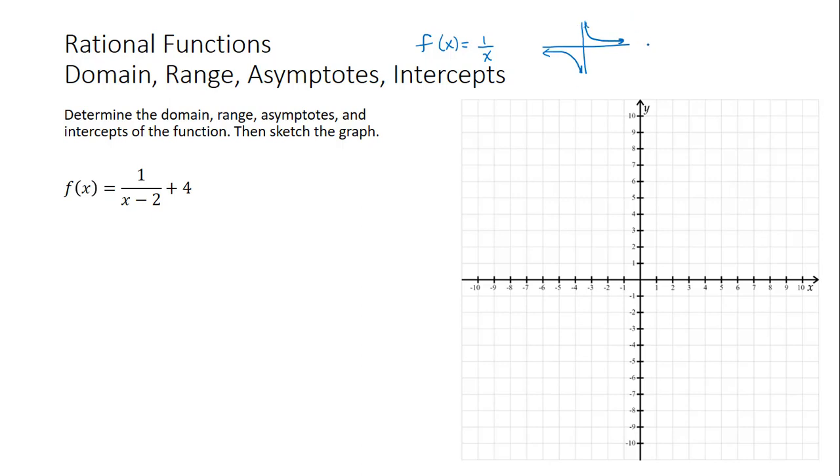Remember that the asymptotes are y equals 0 is a horizontal asymptote, and the vertical asymptote is the equation x equals 0. That is where the function is undefined.